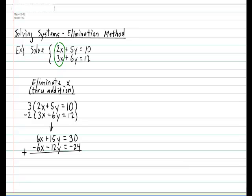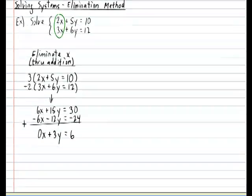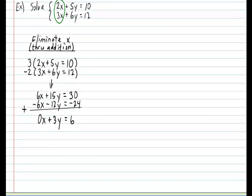6x plus negative 6x will give me 0x. 15y plus negative 12y will give me 3y. And finally, 30 plus negative 24 will give me 6. And the magic is that the x's end up disappearing. Because 0 times x basically cancels out the x. So we are simply left with 3y is equal to 6.